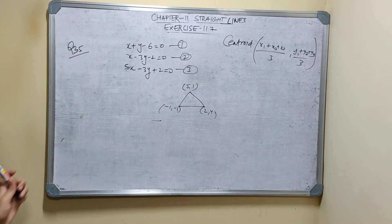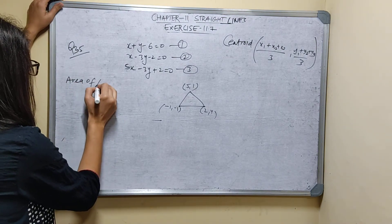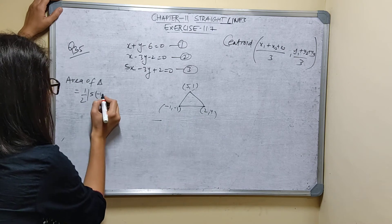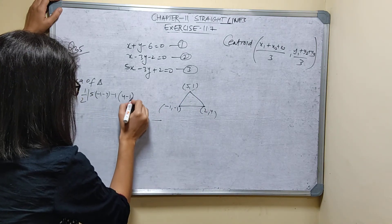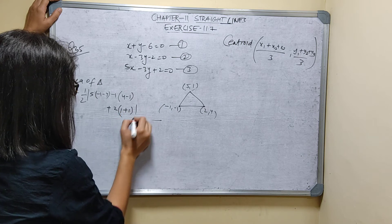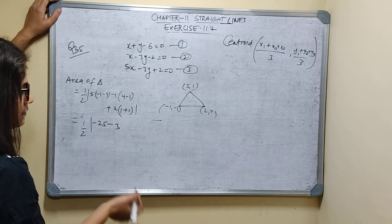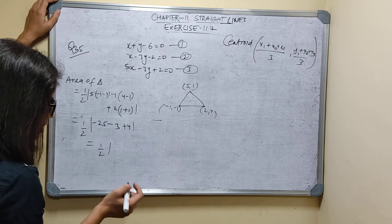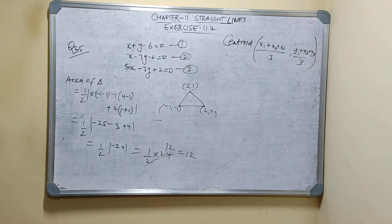Now finding the area of the triangle. The formula is: Area equals half times the modulus of x1(y2 minus y3) plus x2(y3 minus y1) plus x3(y1 minus y2). With vertices (5,1), (−1,−1), (2,4): half of modulus of 5 times (minus 1 minus 4) plus (−1) times (4 minus 1) plus 2 times (1 minus (−1)). That is half of modulus of 5 times (−5) plus (−1)(3) plus 2(2). So half of modulus of minus 25 minus 3 plus 4, which is half of modulus of minus 24, equals 12 square units.